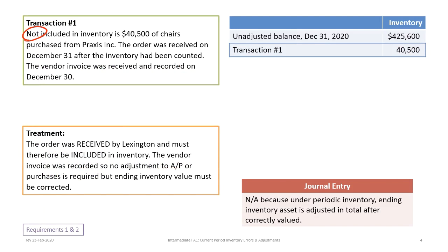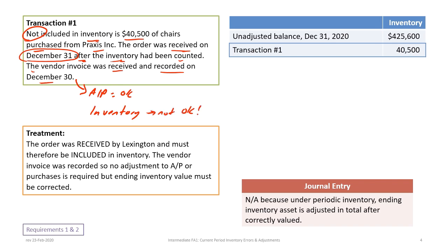For transaction number one, not included in inventory is $40,500 of chairs purchased from a supplier. The order was received on December 31st after the inventory had been counted, and the vendor invoice was received and recorded on December 30th. Accounts payable is okay, but inventory is not, because the order was received by Lexington on December 31st and therefore must be included in inventory. No adjustment to accounts payable or purchases is needed.